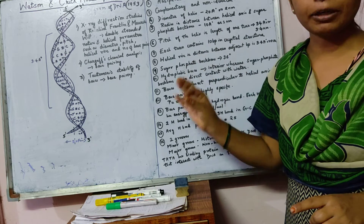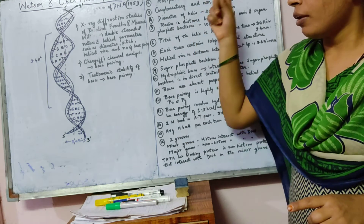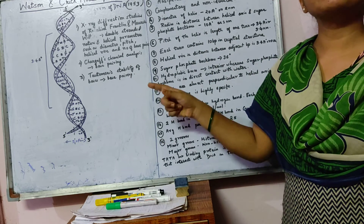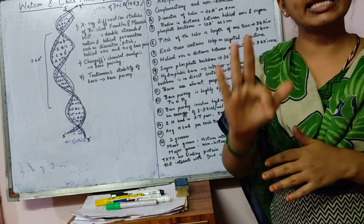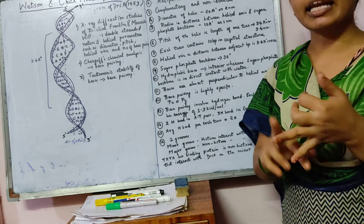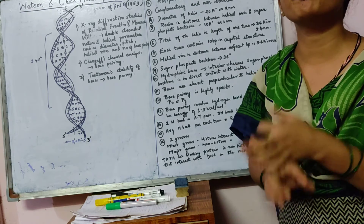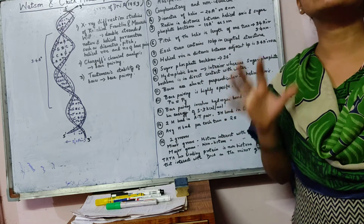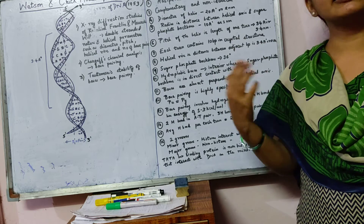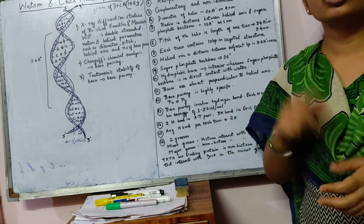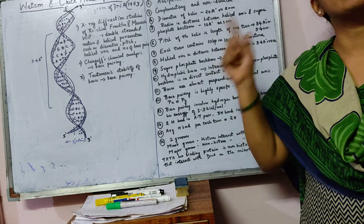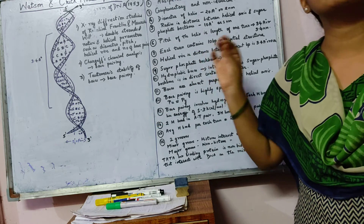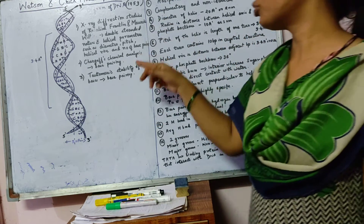The Watson and Crick model of DNA, proposed in 1953, is also called the B form of DNA. DNA is present in different forms: A, B, C, and Z. The Watson and Crick model corresponds to the B form of DNA.